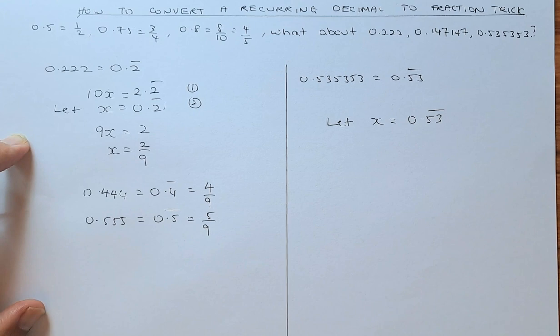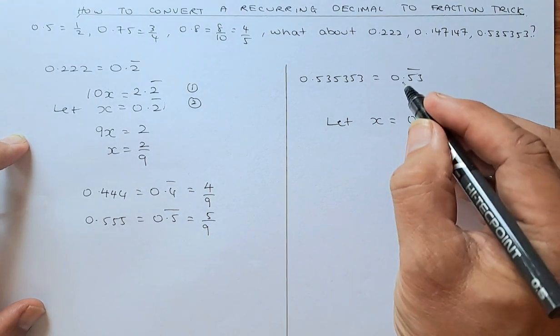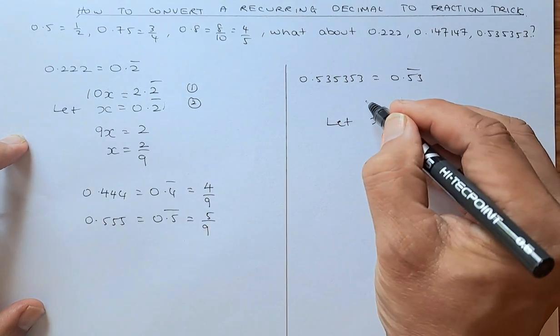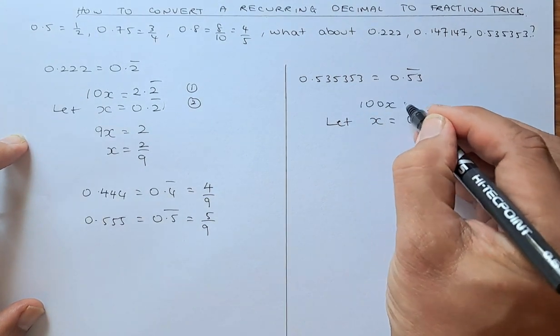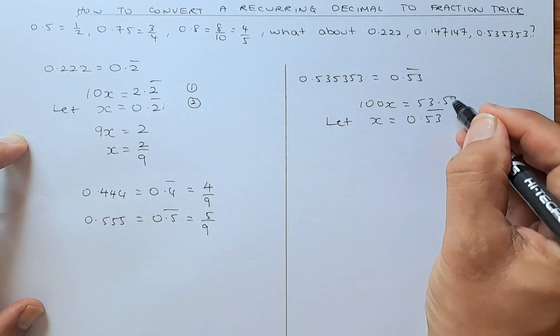Now, to get rid of the recurring, we need to multiply by 100 because there are 2 decimal places. So we are multiplying this equation by 100. That becomes 100x equals to, you move 2 decimal places, is 53.53 recurring.